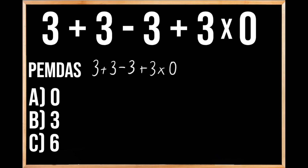When solving this, a lot of people will just solve from left to right. So they'll add 3 plus 3, which gives us 6, and then they'll subtract 3 from 6, which we know is going to give us 3, and then they're going to add 3 onto that 3.